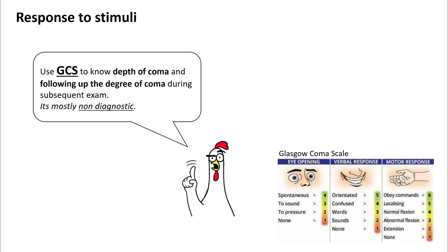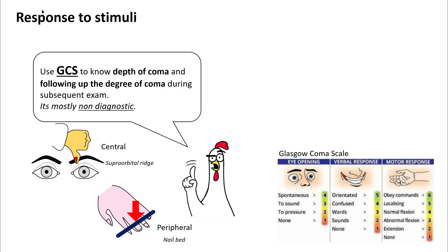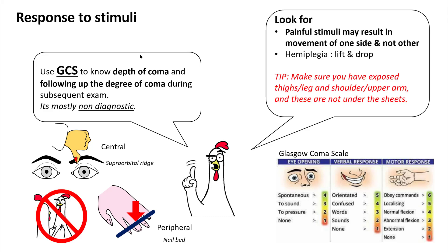Next, perform a GCS. Understand that the GCS is mostly non-diagnostic but gives you the depth of coma and helps in following up these patients. A common error is not performing both central and peripheral painful stimuli to observe for a response. Make sure you have exposed the upper and lower extremities when you apply painful stimuli so you can observe for any slightest of motions.